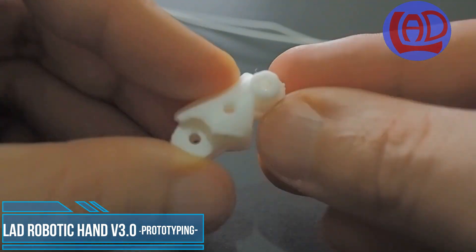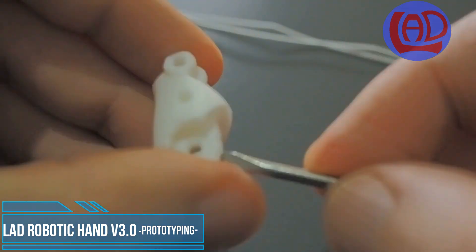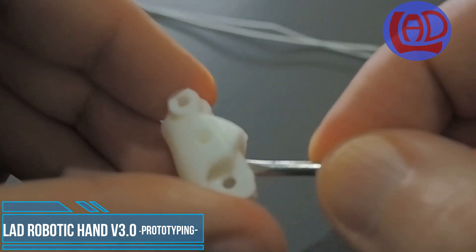I've used white PLA and a mechanism of pulleys and tendons for this version.